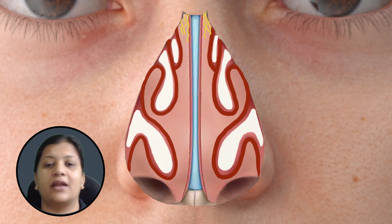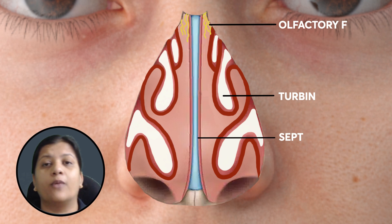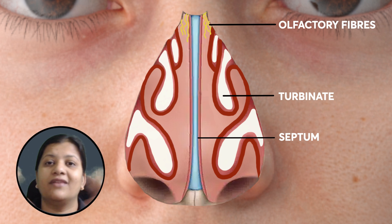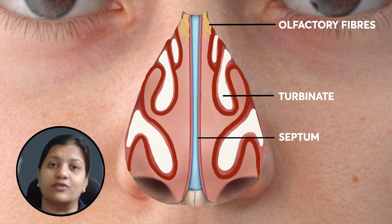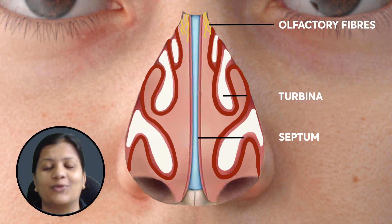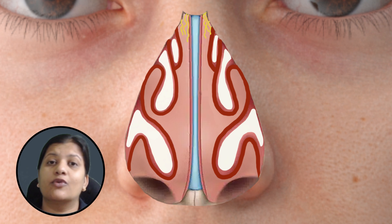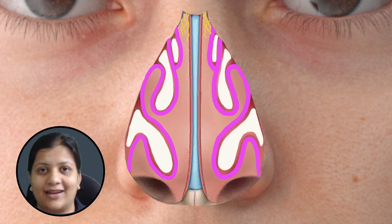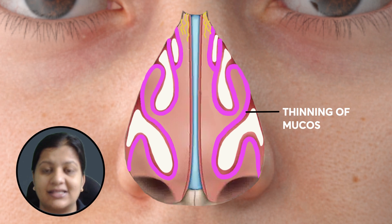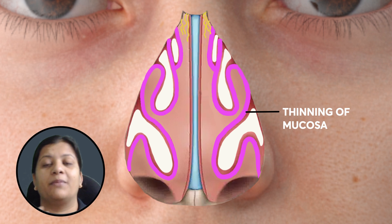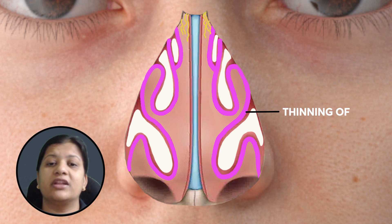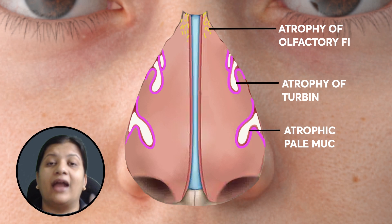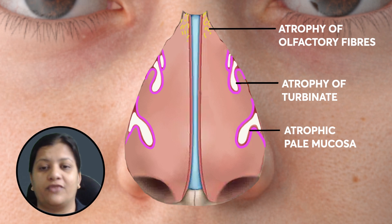When we see a normal nasal cavity, the septum is in the midline, we have turbinates on the lateral wall of the nose, and the olfactory epithelium in the roof of the nose. Normally the mucosa is red and vascular. But in atrophic rhinitis, there is endarteritis resulting in the mucosa becoming pale. Initially the mucosa becomes pale, then the turbinates atrophy, and then the olfactory epithelium also atrophies.